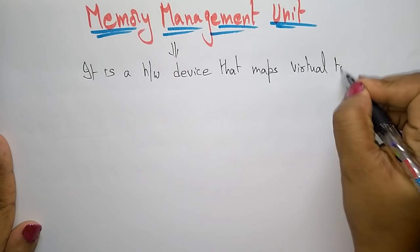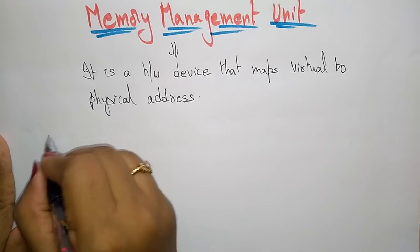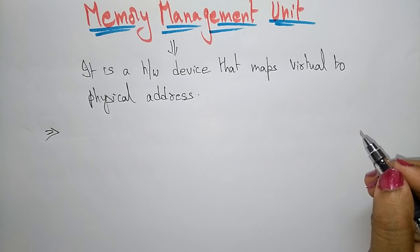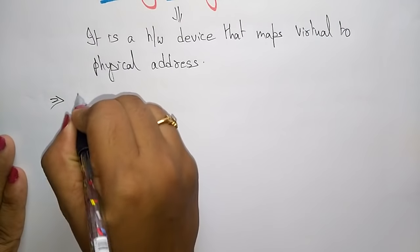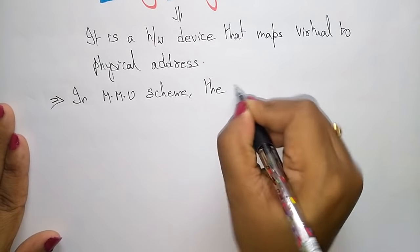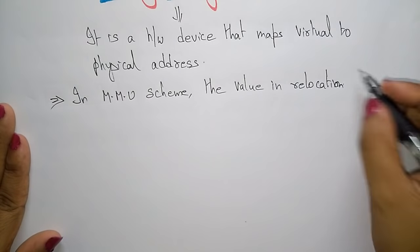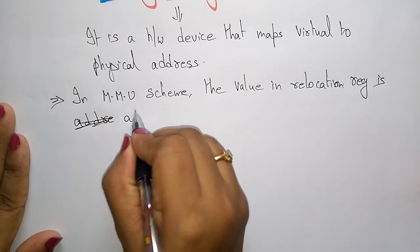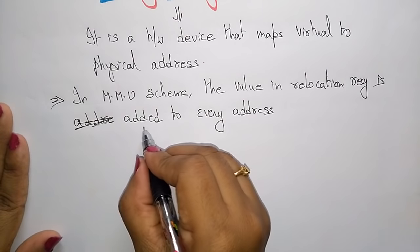The Memory Management Unit is a hardware device that maps virtual (logical) addresses to physical addresses. In the MMU scheme, the value in the relocation register is added to every address generated by the user process at the time it is sent to memory. The MMU consists of one relocation register, and that value is added to every address.